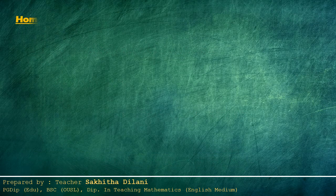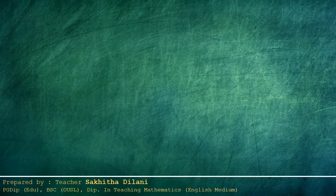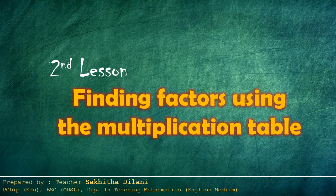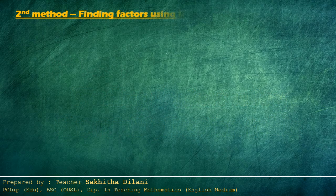Now you are given a homework assignment. Write answers for Exercise 11.1 in the textbook. Now let's move to the second lesson: Finding Factors Using the Multiplication Table. That is the second method.